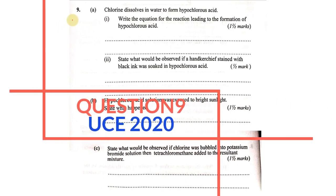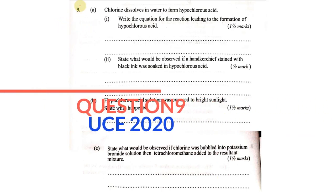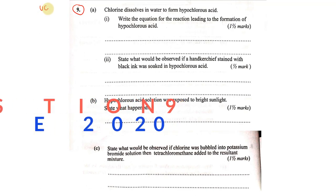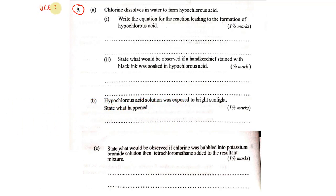Hello and welcome. We are going to look at question 9 of UCE 2020, that is UNEB. Chlorine dissolves in water to form hypochlorous acid. Write the equation for the reaction leading to the formation of hypochlorous acid.